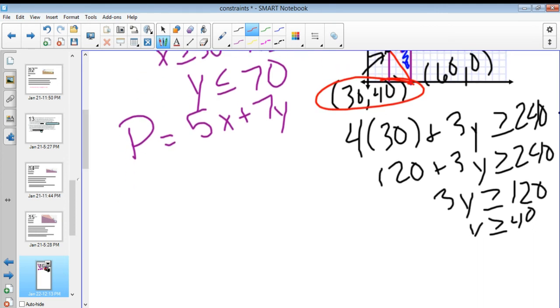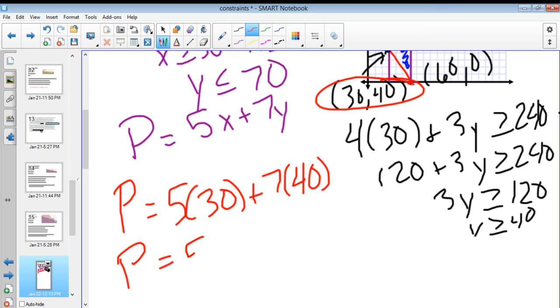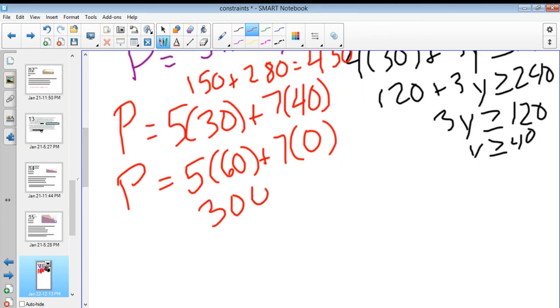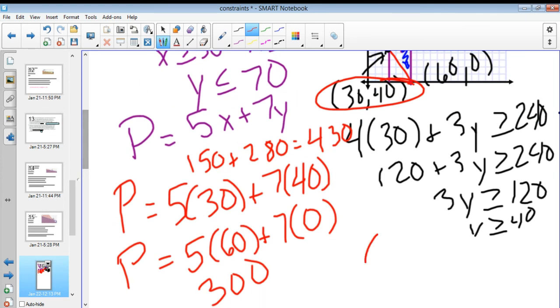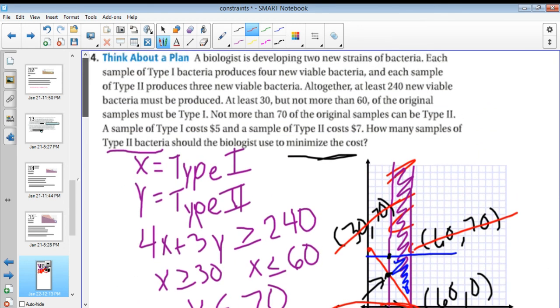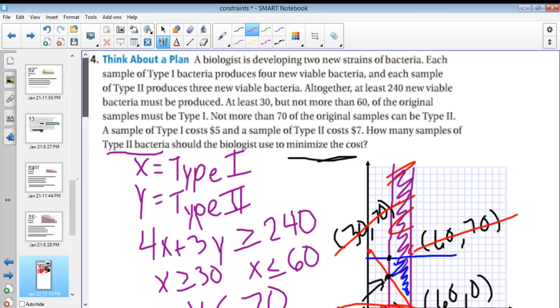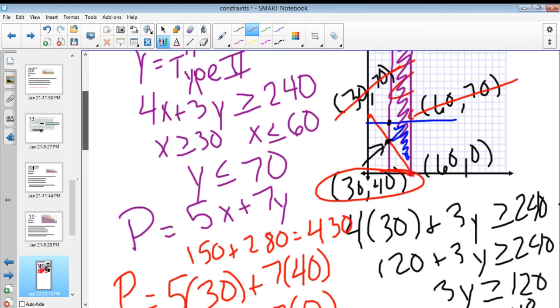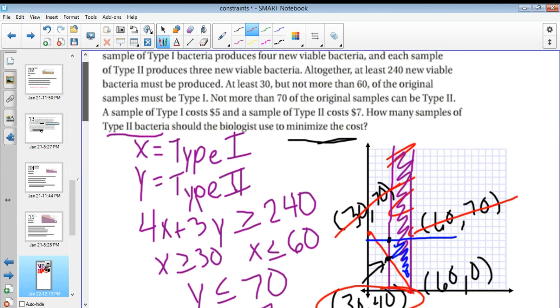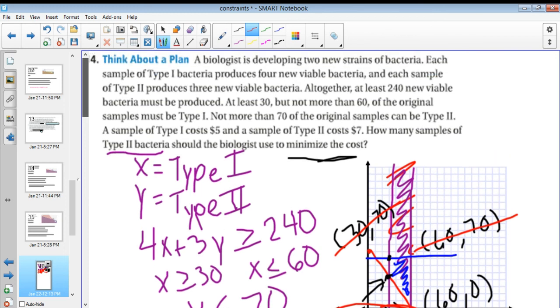So I'm really just down to (60, 0) and (30, 40). So if I want to check that out, I put P is equal to 5 times 30 plus 7 times 40. And then I'll check the other one, which would be P is equal to 5 times 60 plus 7 times 0. So my top one would be 150 plus 280, which is equal to 430. So I know that the best way I'm going to have this, my best method is if I actually have 60 of the original type, 60 of Type 1 and 0 of the old one. Or sorry, 0 of Type 2. So how many samples of Type 2 should the biologist use to minimize cost is 0.